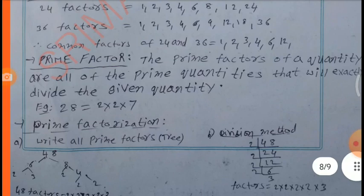The prime factors of a quantity are all of the prime quantities that will exactly divide the given quantity. Example: Find all prime factors — write all prime factors using prime factorization.